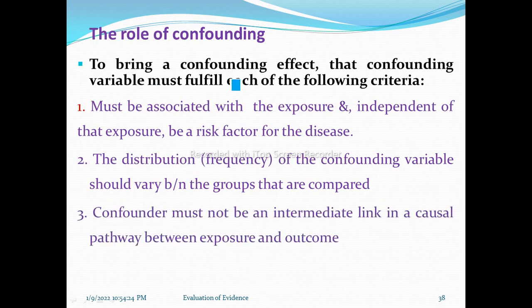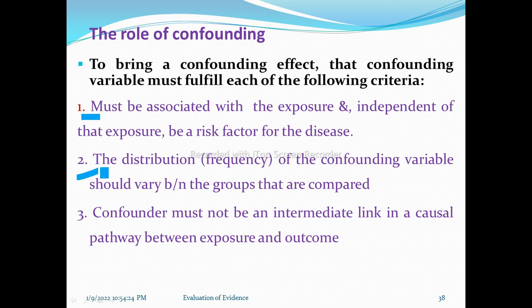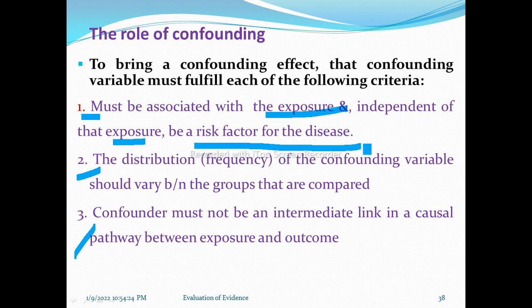To bring a confounding effect, the confounding variable must fulfill each of the following three criteria. First, the confounding factor must be associated with the exposure — there is a relationship with the exposure — and, independent of that exposure, must be a risk factor for the disease. Without the exposure, there is still a risk factor for the disease.